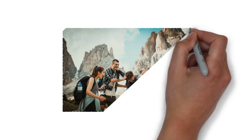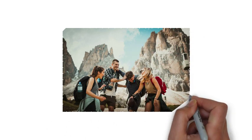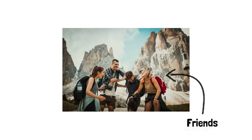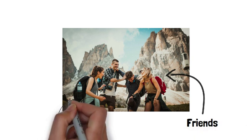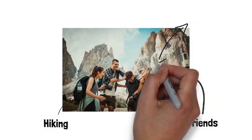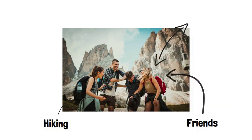In this picture, you can make several inferences as well. You can infer that these people are friends by their body language and closeness to one another. You can infer by their backpacks that they did some hiking, and you can infer that the weather is warm by what the people are wearing, the lack of snow in the background, and the water bottle nestled in a backpack.